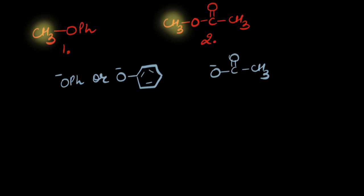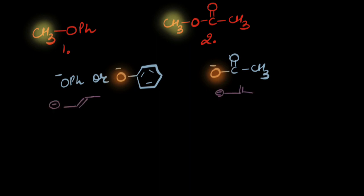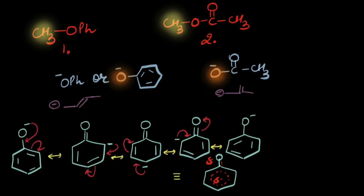In both cases, the negative charge resides on the oxygen atom. So we need to take help of electronic effects. In both these cases, the negative charge is alternate to a pi bond, so there is a possibility of resonance in each case. Let's draw the resonating structures for the first anion — we see how the negative charge travels through the entire benzene ring, so it is stabilized.